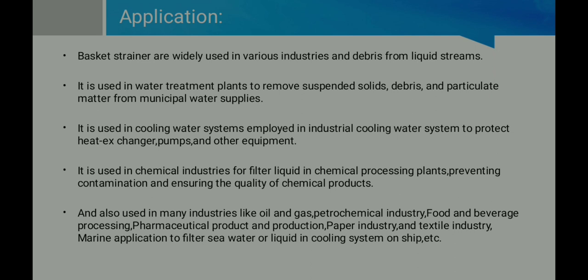Basket strainers are also used in many industries such as oil and gas, petrochemical, food and beverage processing, pharmaceutical production, paper industries, textile industries, and marine applications — for example, to filter sea water or liquid in a cooling system on a ship. One of the main advantages is that the basket strainer is placed directly in the process pipeline, unlike other filtration systems that require separate space.